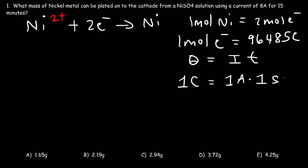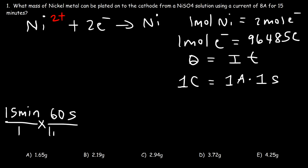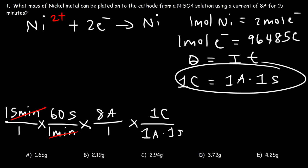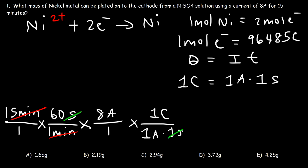To calculate the mass of nickel plated onto the cathode, start with the time in minutes and convert to seconds — there are 60 seconds in one minute. Then multiply by the current of 8 amps. Minutes cancel, leaving seconds times amps, which is equivalent to coulombs. Using the conversion that 1 amp times 1 second equals 1 coulomb, we can cancel seconds and amps, giving us the charge in coulombs.